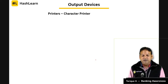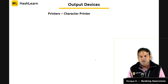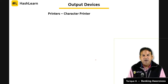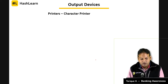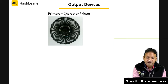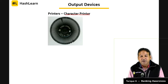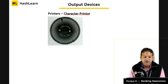Now let us look at output devices — devices that display or present information. Output can be in print (hard copy) or on screen (soft copy). The most common output devices are printers. There are different types of printers: character printers, line printers, and page printers.